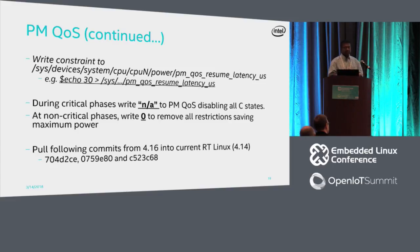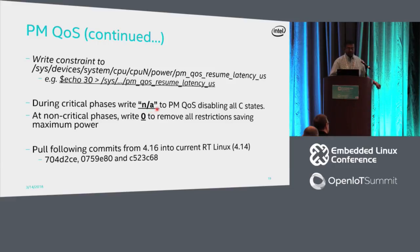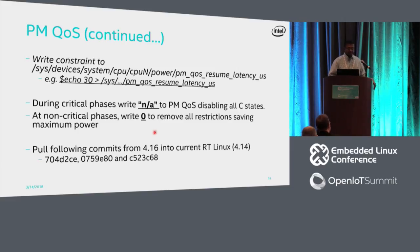You write the constraint to each CPU's PM QoS resume latency attribute. Writing N/A disables all C-states completely; writing zero removes all restrictions. This is a change added in kernel 4.16, and RT Linux is currently at 4.14, so these changes are not yet there. There are three patches you may need to pull in if you are using the RT Linux distribution.